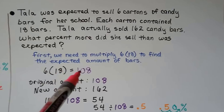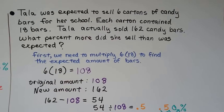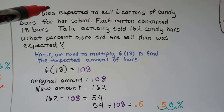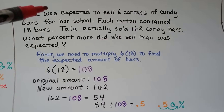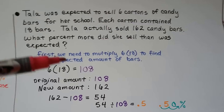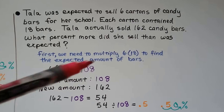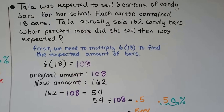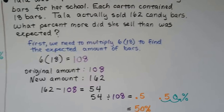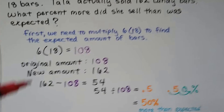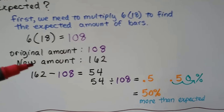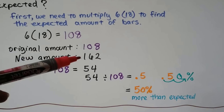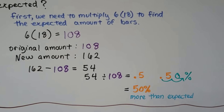6 times 18 equals 108, so she was given 108 candy bars and was expected to sell them, but she actually sold 162 — she probably went back and asked for more to sell. So the original amount is 108 and the new amount is 162. Because the new amount is bigger, we know it was an increase.